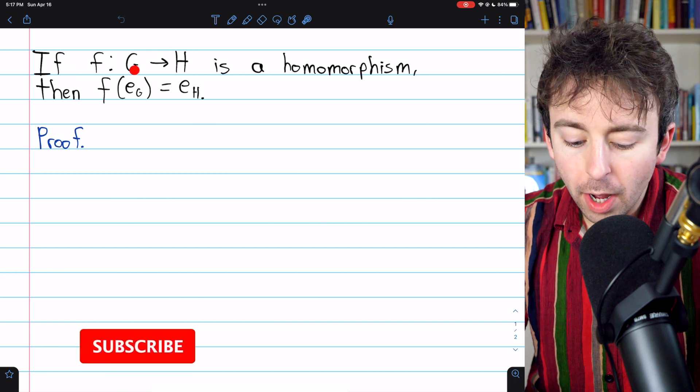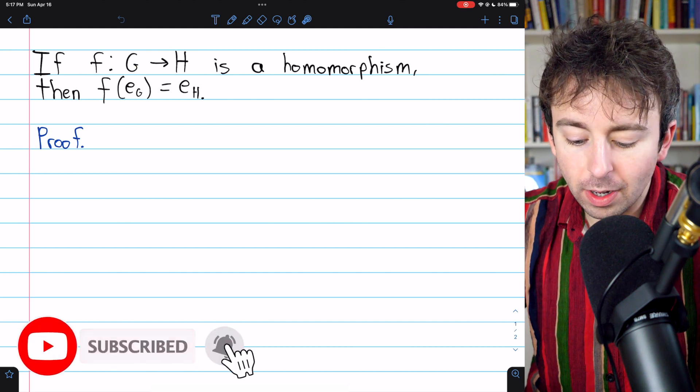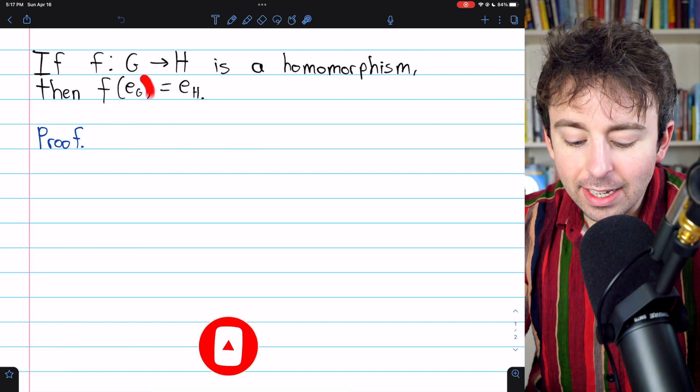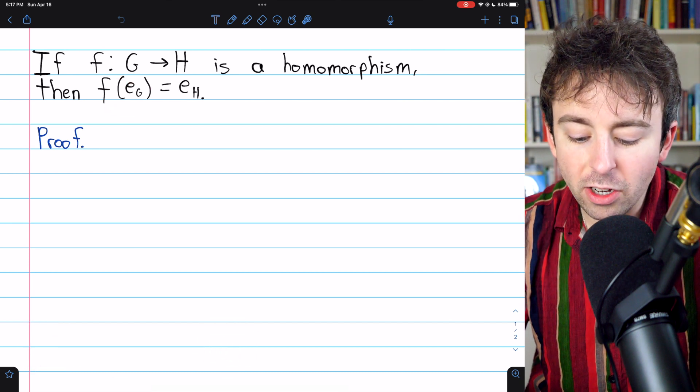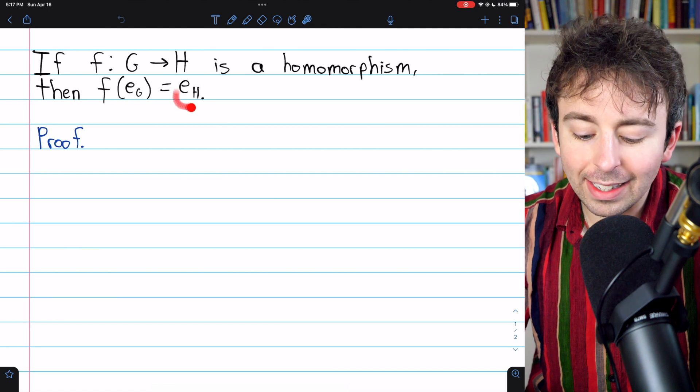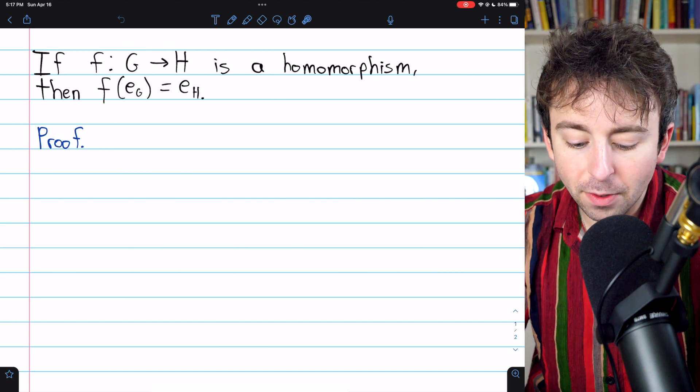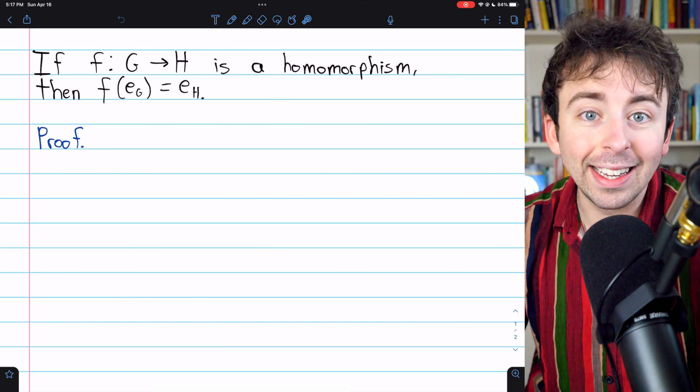If f is a function from a group G to a group H and it's a homomorphism, then f of the identity of G, which we'll call e_G, is equal to the identity of H, which we'll call e_H. The homomorphism maps the identity to the identity.